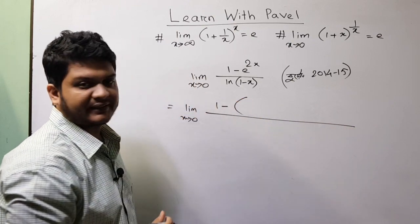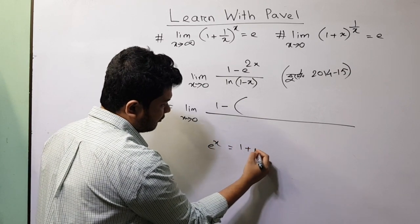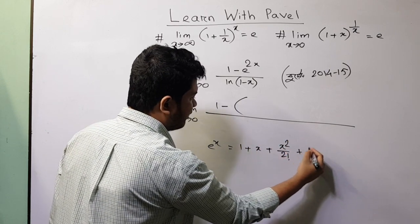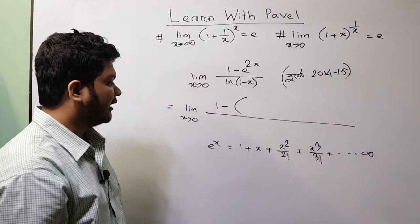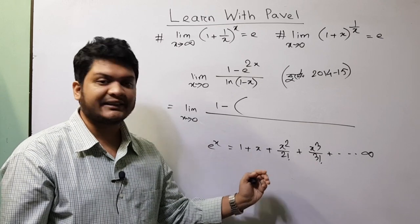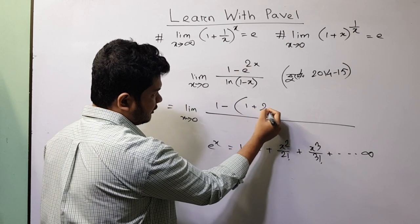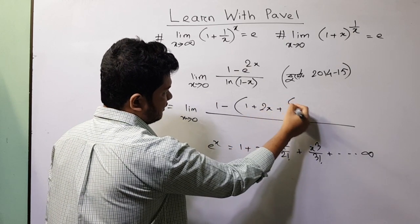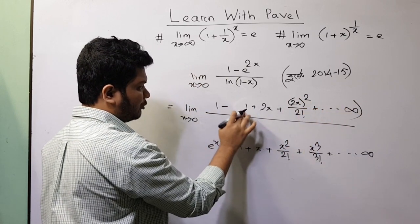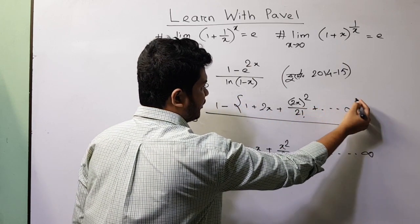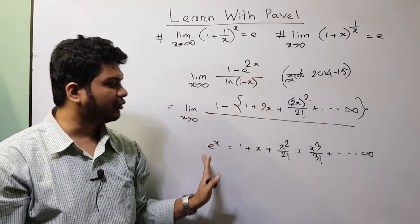We have 1 minus e to the bar 2x. The series expansion of e^x is: 1 plus x plus x squared by 2 factorial plus x cubed by 3 factorial, continuing to infinity. Substituting x with 2x, it becomes: 1 plus 2x plus (2x) squared by 2 factorial, continuing to infinity. So e^(2x) gives us 2x squared by 2 factorial as the key term in the second bracket.